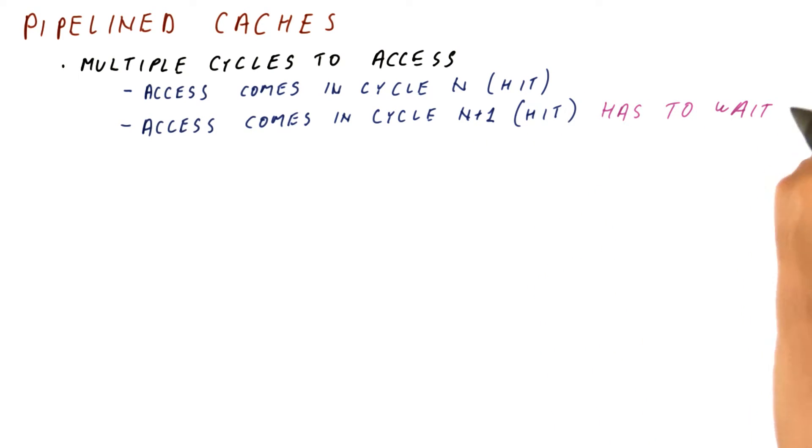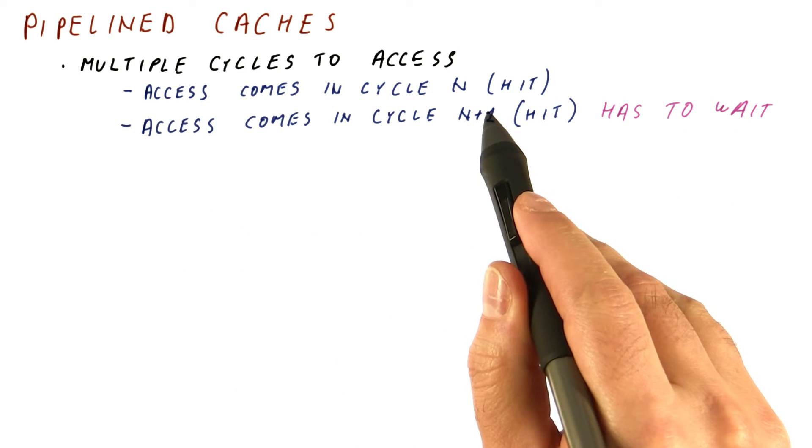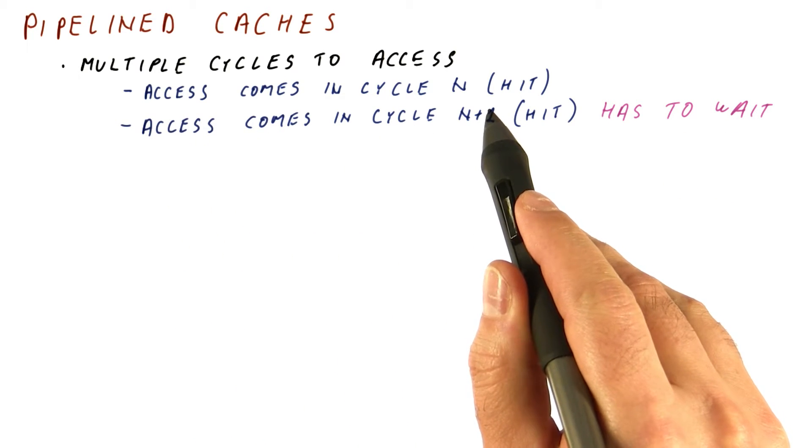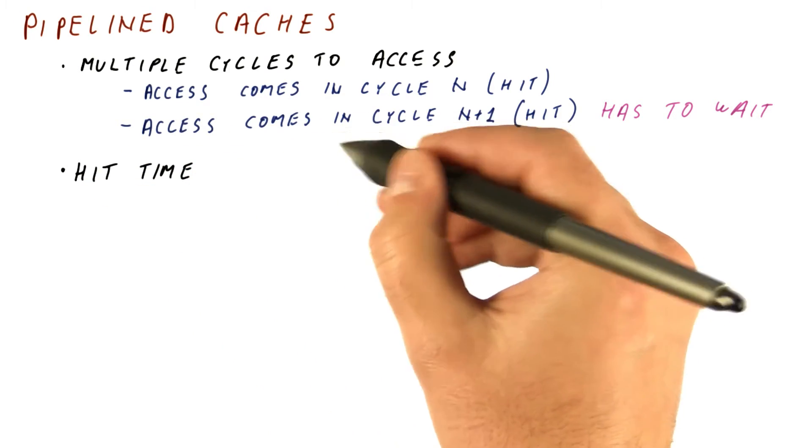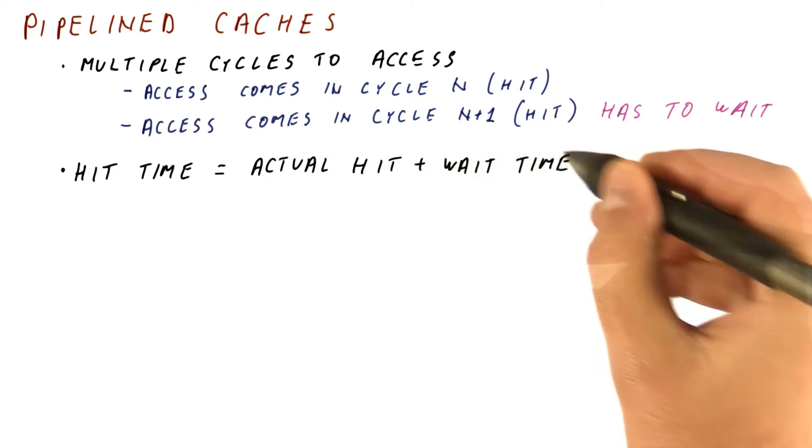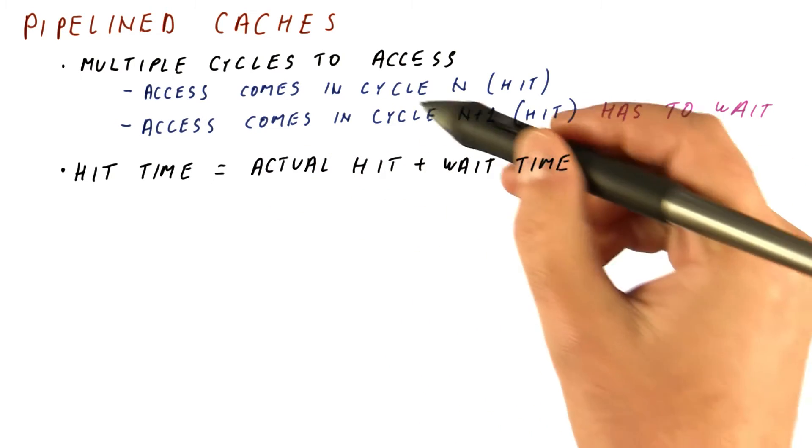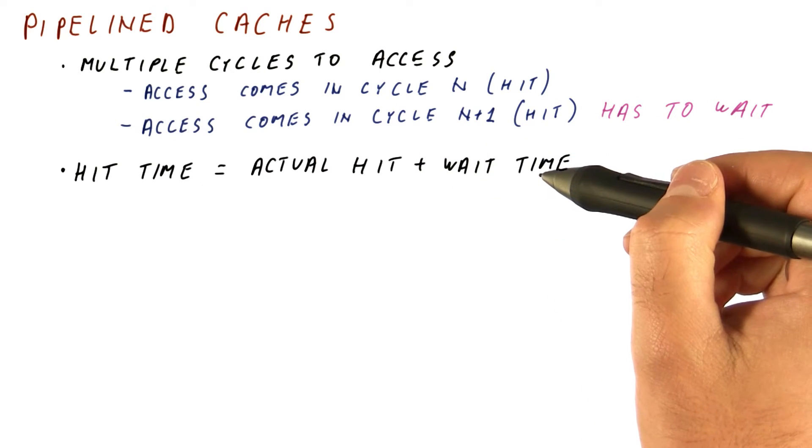in a non-pipelined cache, the second access has to wait until the first access is done using the cache, and it takes multiple cycles to do that. So in this situation, the hit time, as seen by each access, is the actual hit time of the cache plus the wait time that the access suffers because it cannot access the cache until the previous one is done.